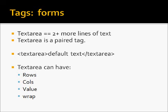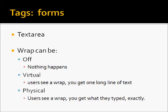Wrap is special, and only for text areas. There are three kinds of wraps. When the wrap is off, you get nothing, and the users see normal wrapping. When it is virtual, the users see a wrap — for example, if the word wrap got cut in half at a letter, then the user would see the word wrapping to the next line, but you would get one big long line of text in your email or your CGI script. If it were physical wrap, the user would see the wrap, and you would get exactly what they typed into the form.